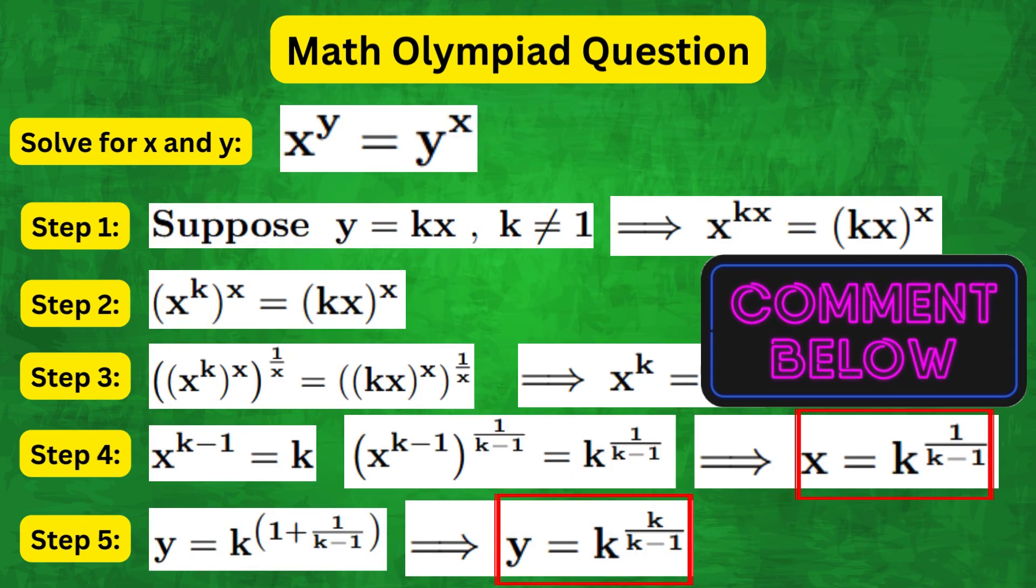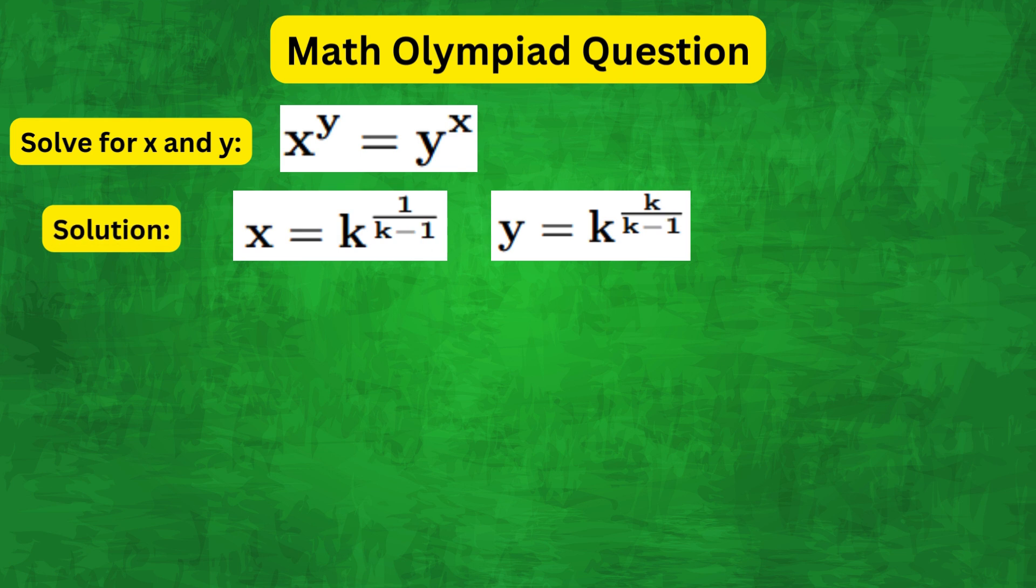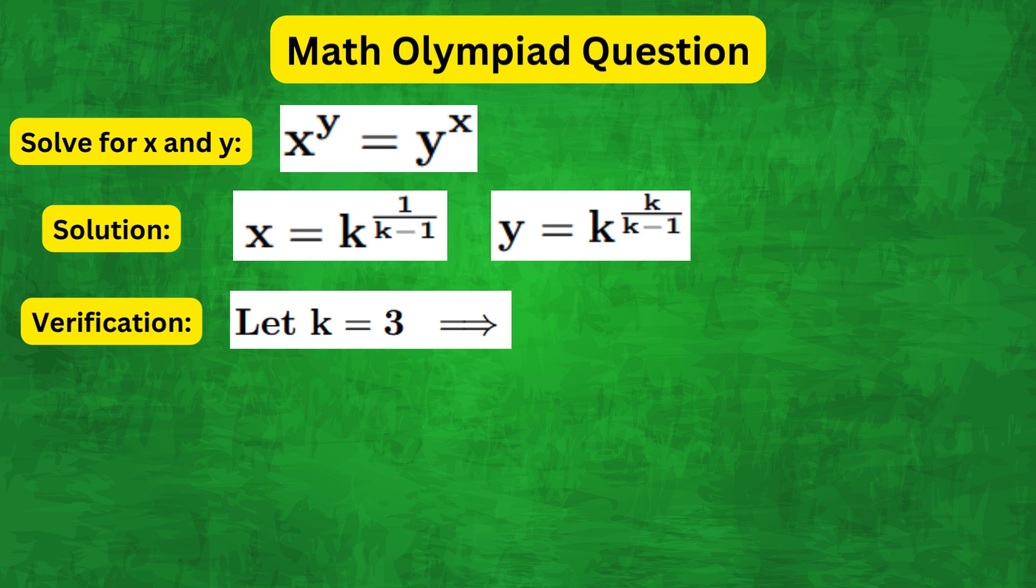Please comment below if you've got a different way of solving this one. Now, let's just quickly check that this is indeed the correct solution by setting k equals 3. So we get x equals 3 to the power of 1 half, and y equals 3 to the power of 3 over 2.